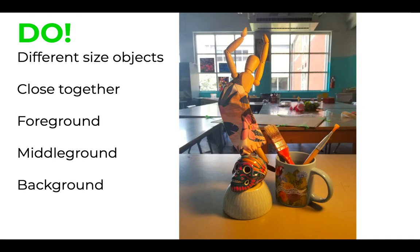When you do these direct observational drawings, I'm requiring you to have at least four objects. Find a quiet space and set aside some time every week — these are not things that should take just five minutes. If you had me last year, we would draw these for about 15 minutes. Don't rush to get it done because these are graded and you want them to look as best as possible. The more you do this, the better you'll get at looking at something, drawing it, and observing it.